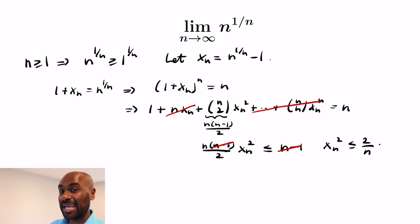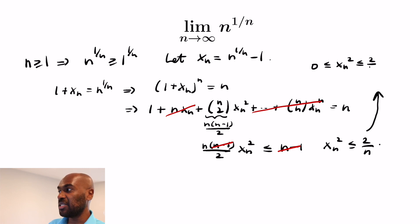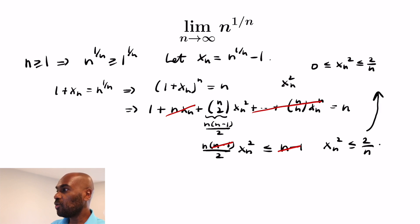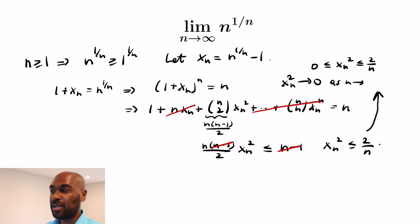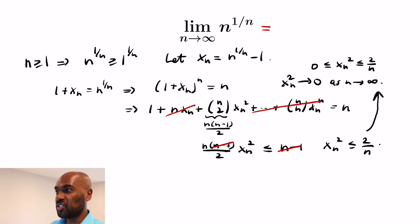That's great, because we know x_n is a non-negative number. So x_n² being at most 2/n sandwiches x_n² between 0 and 2/n. So x_n² itself goes to 0 as n goes to infinity. Since x_n is non-negative, if its square goes to 0, the sequence itself goes to 0 as well, and so our limit is actually 1.